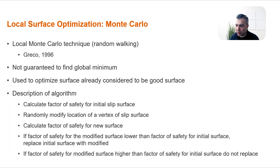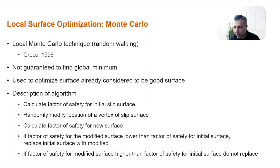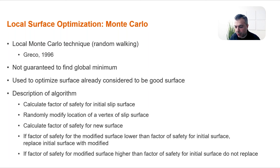After global optimization, we require local optimizations. We have two methods. One is the traditional Monte Carlo optimization based on Greco 1996 — it doesn't guarantee finding the global minimum and might get trapped in local minima. It is used to optimize surfaces already considered to be good surfaces. Basically, we calculate factor of safety, randomly modify the location of a vertex of a slip surface, calculate factor of safety for the new surface, and if the new factor of safety is lower we keep the new one — otherwise we keep the old one.